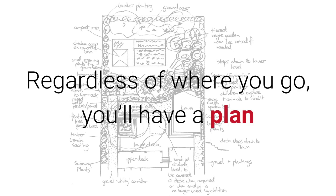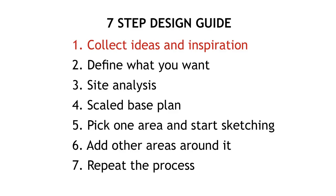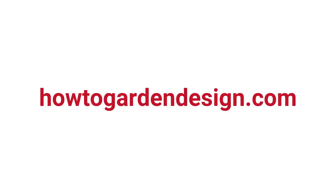Regardless of where you go, you'll have a plan. So, in summary, the seven-step design guide: collect ideas and inspiration; define what you want; conduct site analysis; make a scaled base plan; pick one area and start sketching; add other areas around it; and repeat the process. There we go guys — a quick overview of my seven-step design guide. If you have any more questions, feel free to let me know. And if you want some more information, head over to my website at howtogardendesign.com. The following videos will take a more in-depth look at each step to help you out and make sure you're on the right track. Thanks for watching.